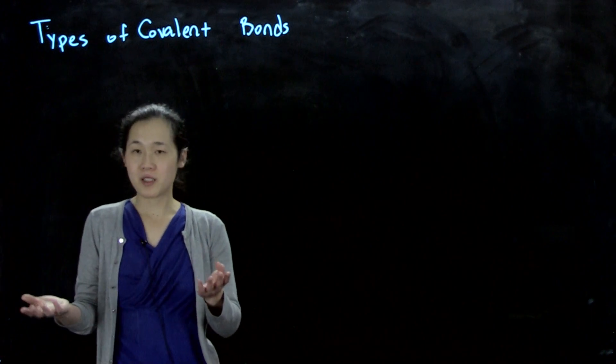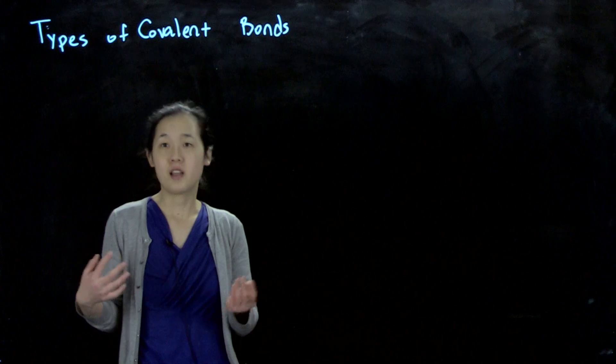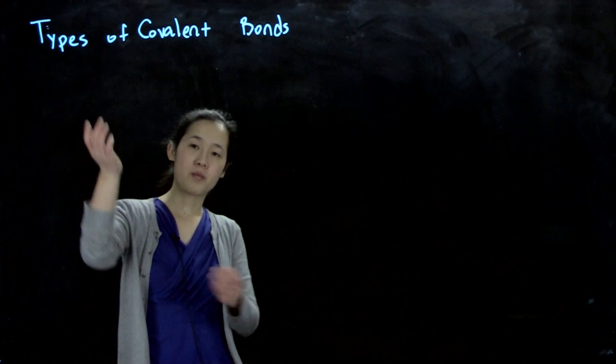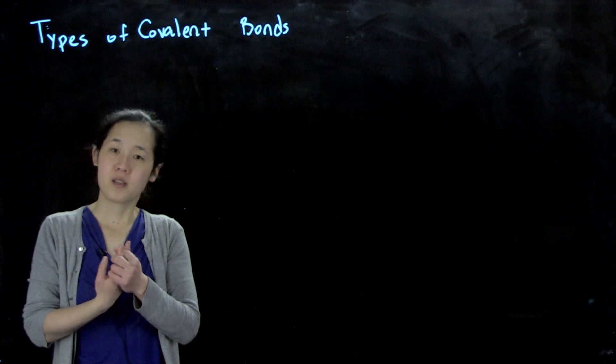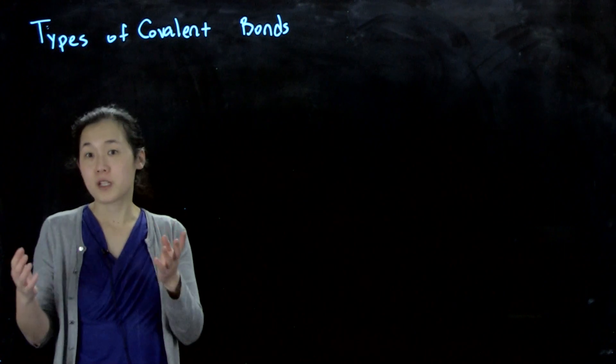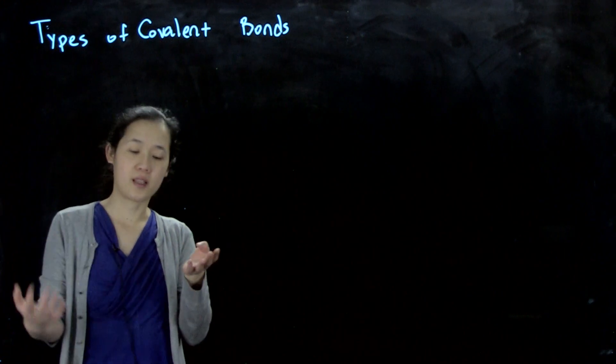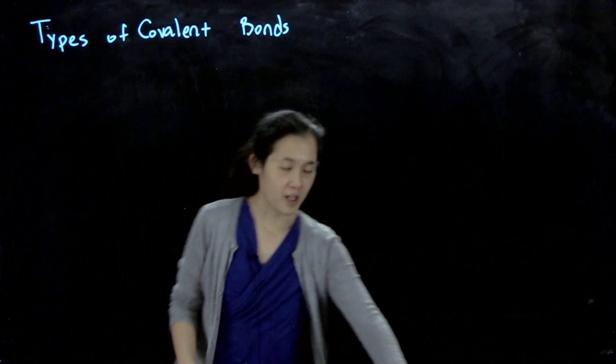We previously talked about two types of bonding: ionic bonding and covalent bonding. But there are multiple types of covalent bonds. Even though we're sharing electrons pretty equally between atoms, the origin of where those electrons come from could be slightly different. We'll go through different classes.